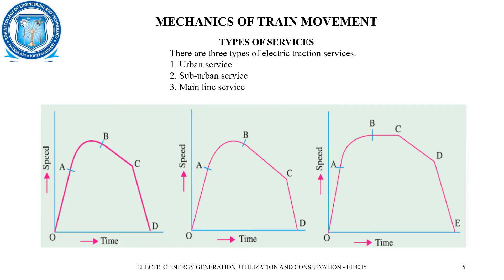There are several different types of services, because train movement in populated areas of the city — suburban, urban, or rural — may differ. We have three types of electric traction services: urban service, suburban service, and mainline service. In urban service, the steepness of the curve is more and there is almost no free running period. In suburban service, the steepness is not as much as urban but is still adequate. In mainline service, the steepness is less and there is a free running period between B and C.